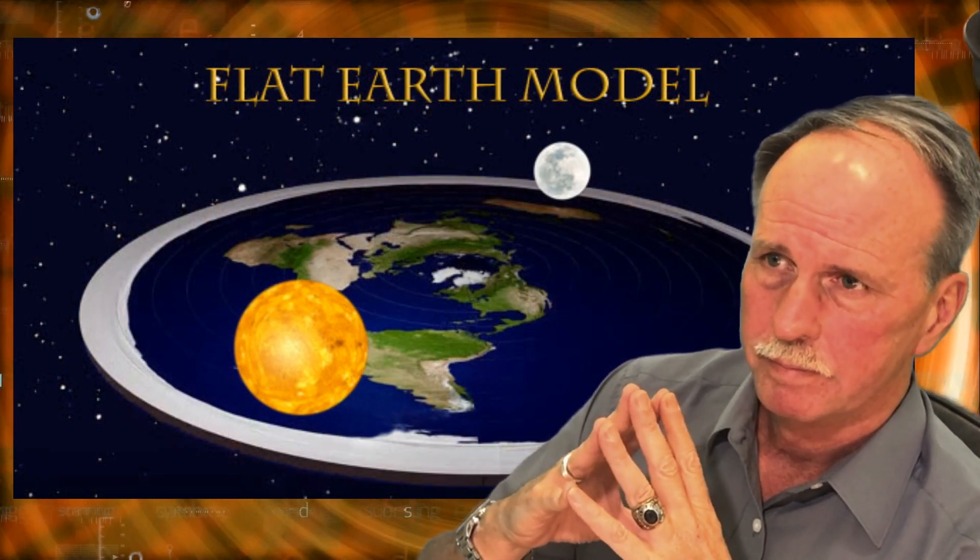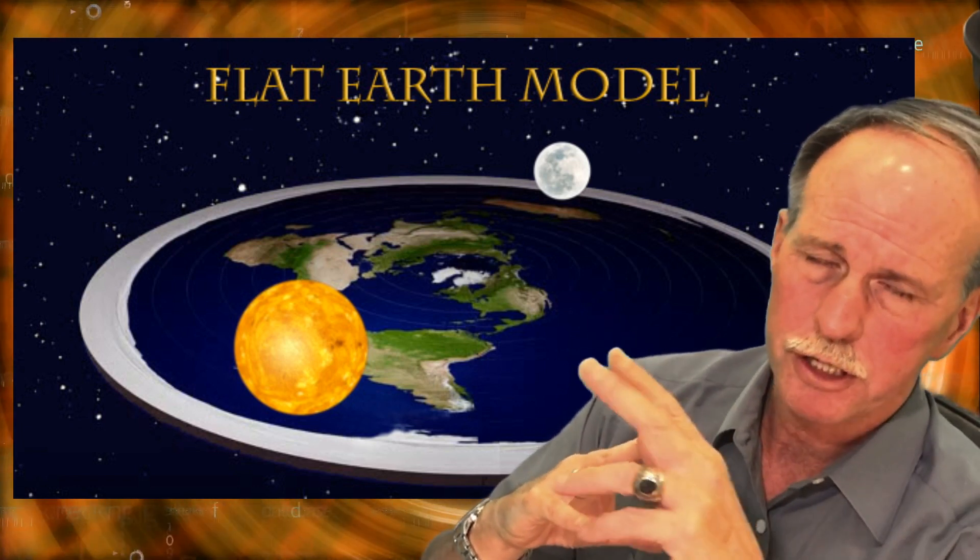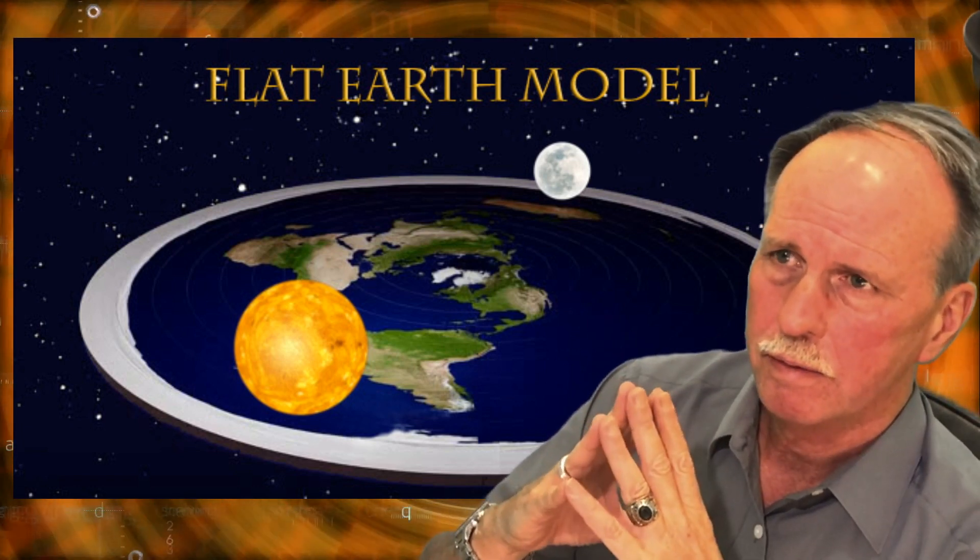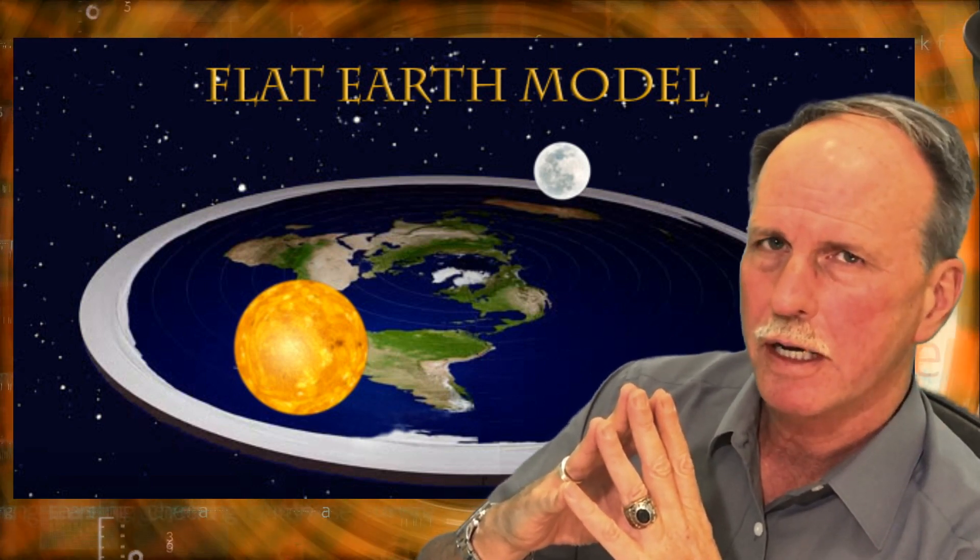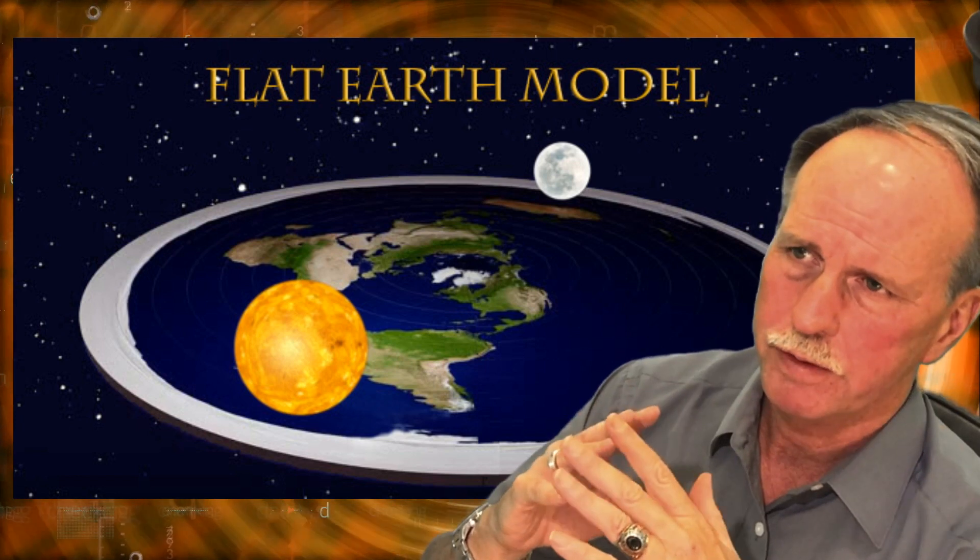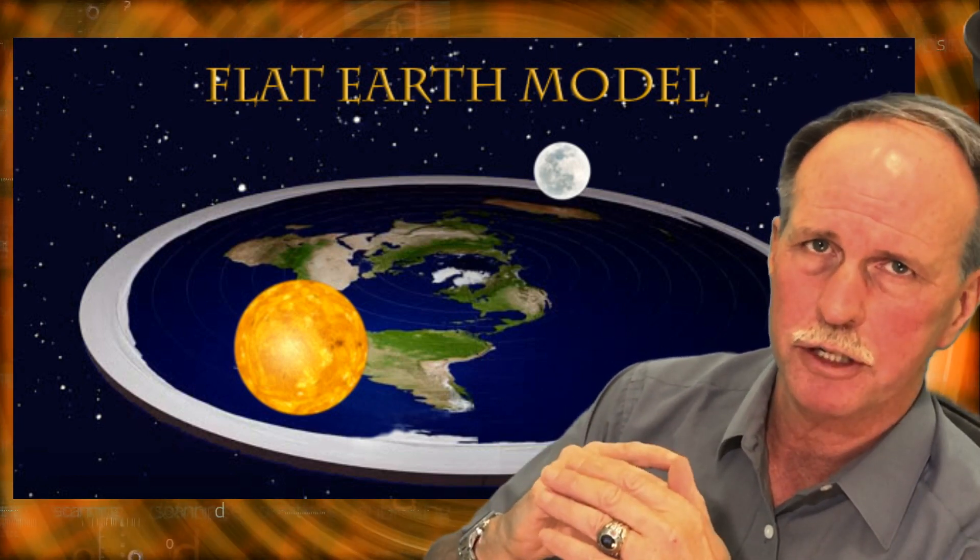Number five. If the sun and the moon move in a circle over the flat Earth, what force causes them to do that? What force causes the sun to move in a circle from the Tropic of Capricorn to the Tropic of Cancer and back?